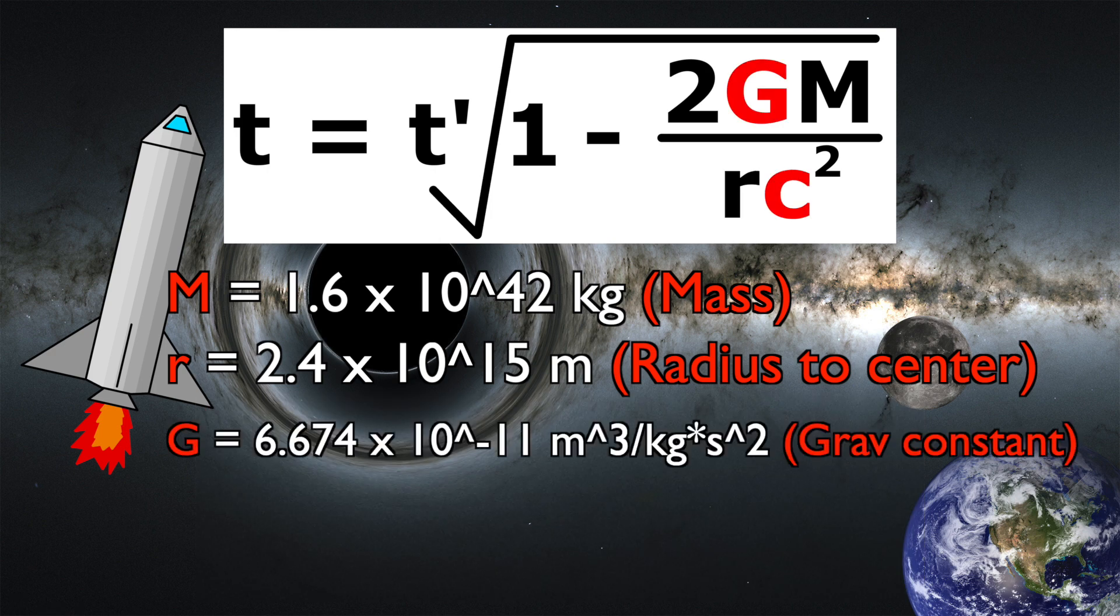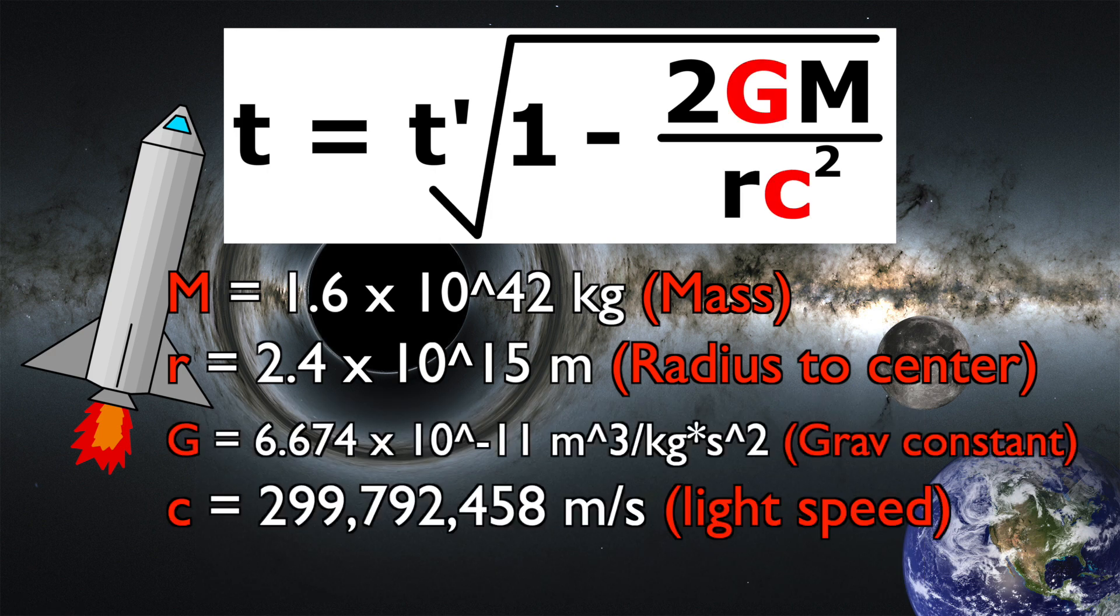G and C are the gravitational and speed of light constants respectively. Now let's find out what kind of time dilation we're looking at here.